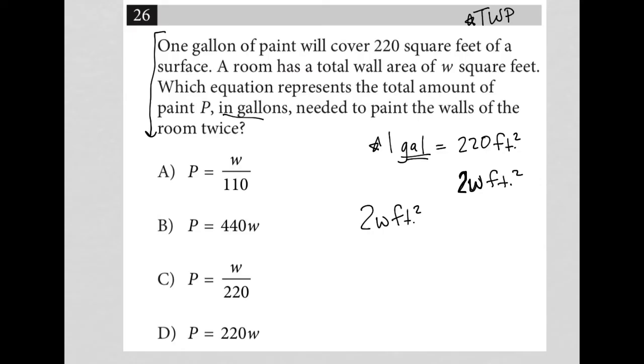This becomes just like a unit conversion question. So we always start off with what we have. We have 2W square feet of wall space. I'm going to multiply that by my conversion factor, which is the relationship between the amount of gallons of paint and the amount of wall space it can cover. So I'm going to put 220 square feet down in the denominator. Why do I put it there? Because that allows me to cross out the units that I do not want.